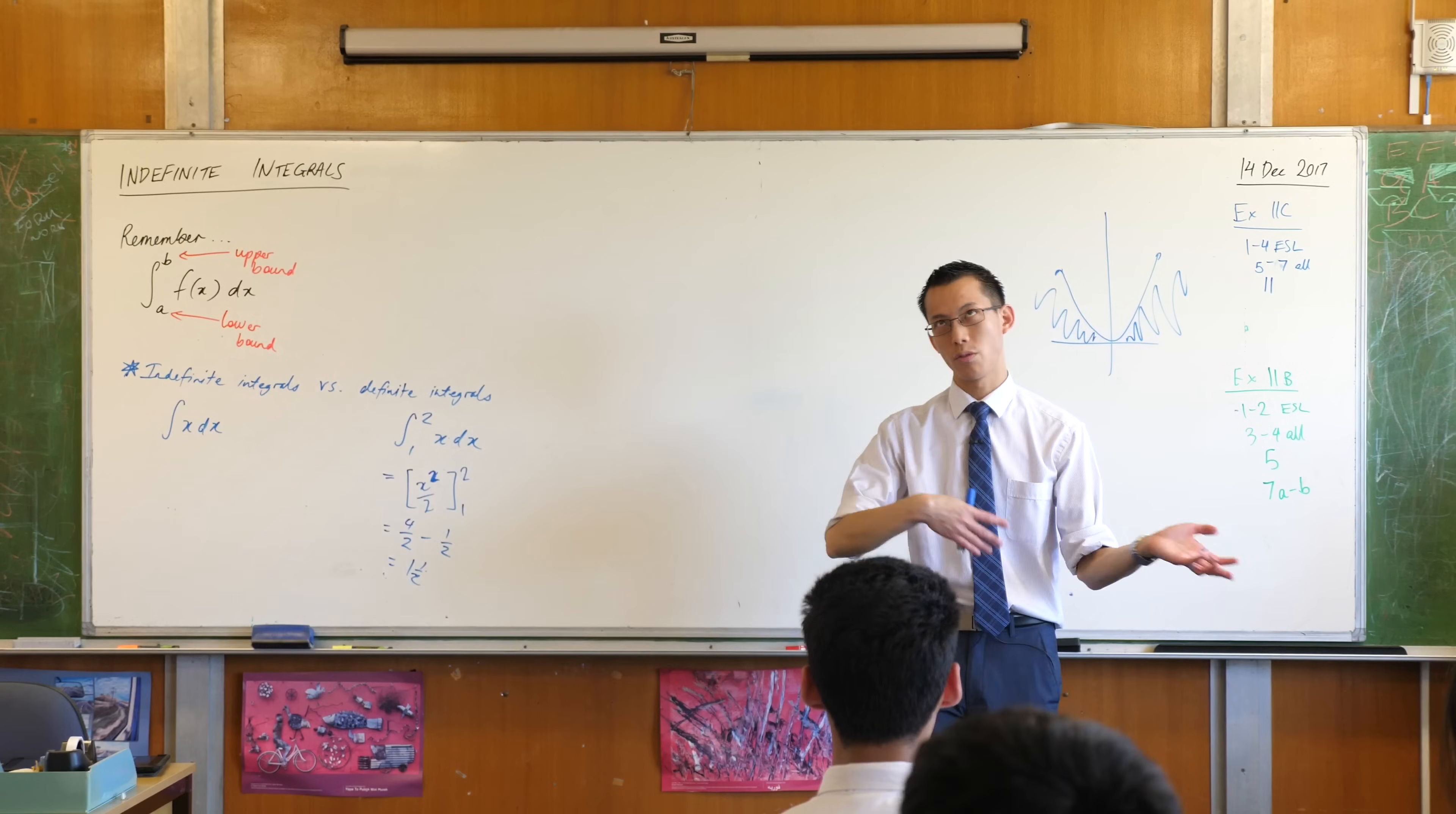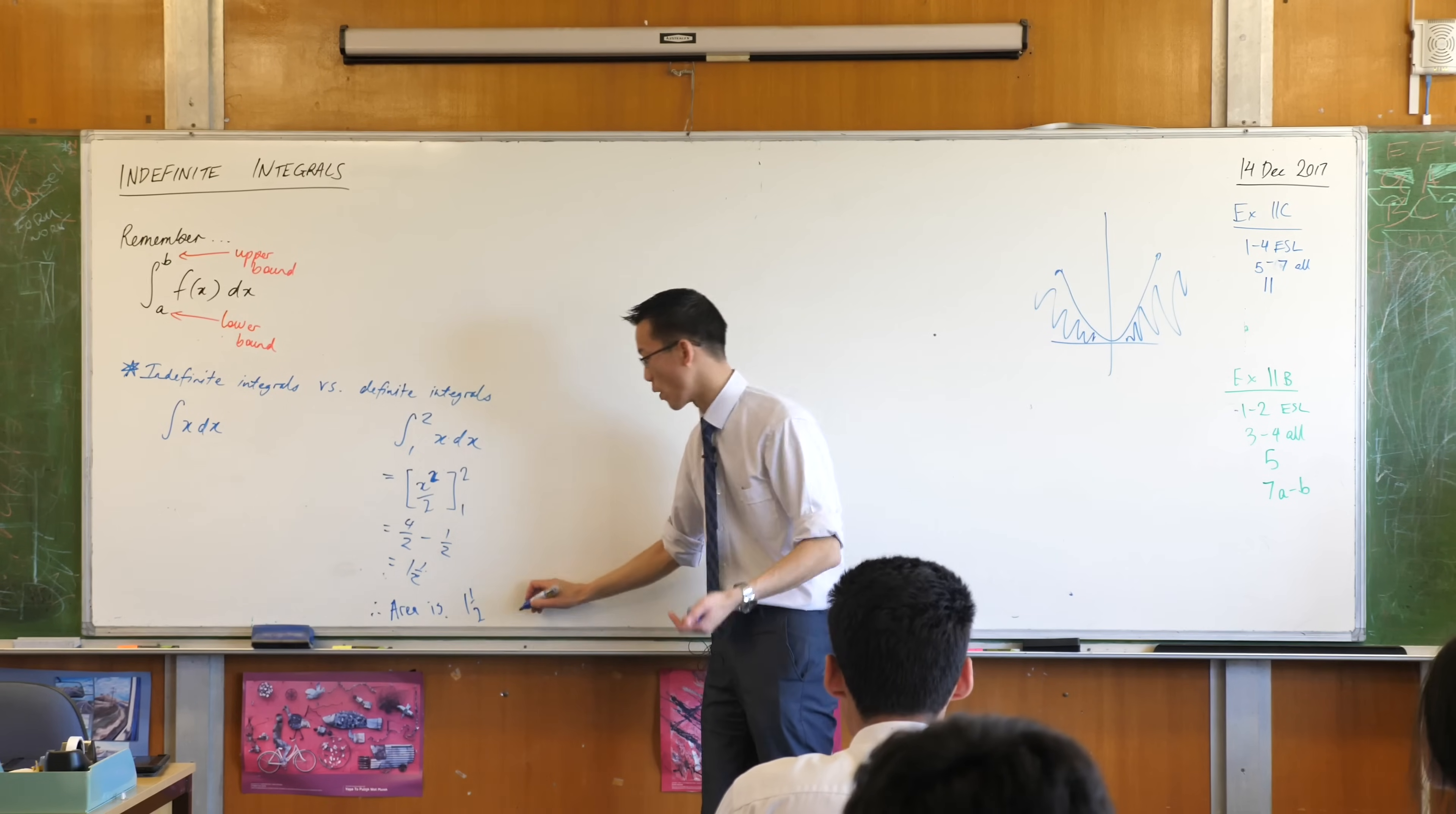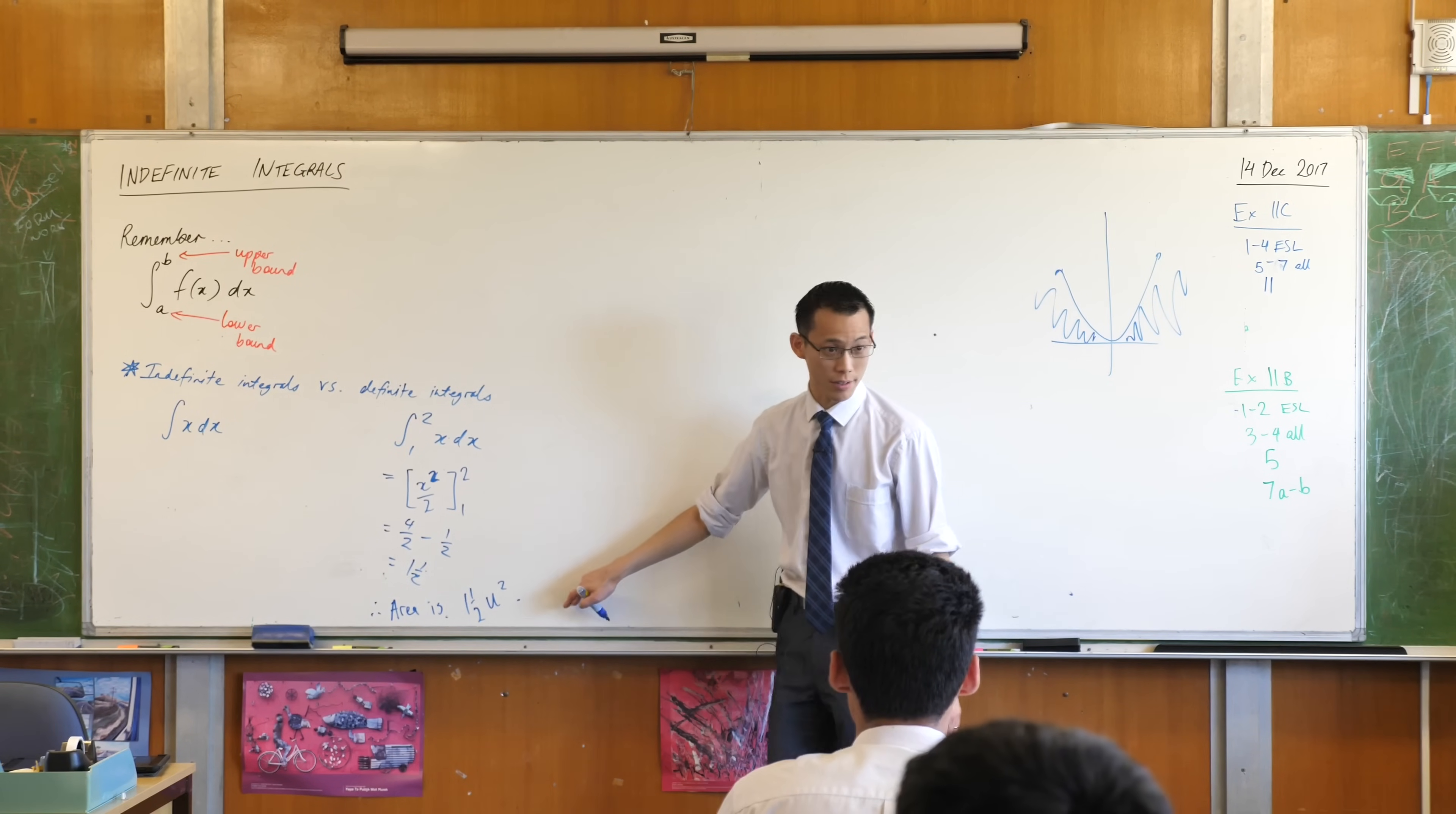Like is it 1 and a half square centimetres? Square metres? Square kilometres? On a Cartesian plane you've got no units like that so you would say, for example, the area is 1 and a half and then you'd literally say, square units. Because you don't have centimetres or inches or whatever provided, so whatever units they are. But please note, the integral itself is just a number. The area has area units on it.